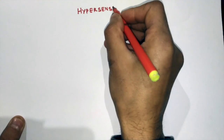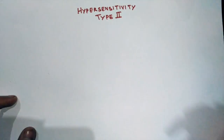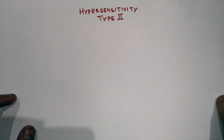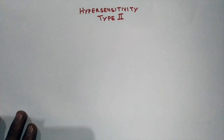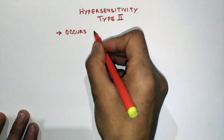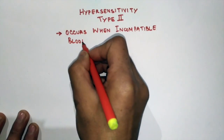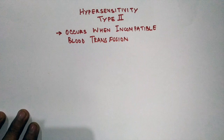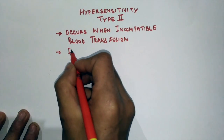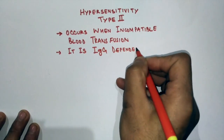This is part two of the hypersensitivity video series. In this video, we will discuss hypersensitivity type 2. This hypersensitivity is shown by the immune system and occurs when there is incompatible blood transfusion — for example, when a blood group A person gets B blood or vice versa. It must be noted that in the case of universal donors, this does not happen. This type is IgG-dependent, meaning immunoglobulin G takes part in it.